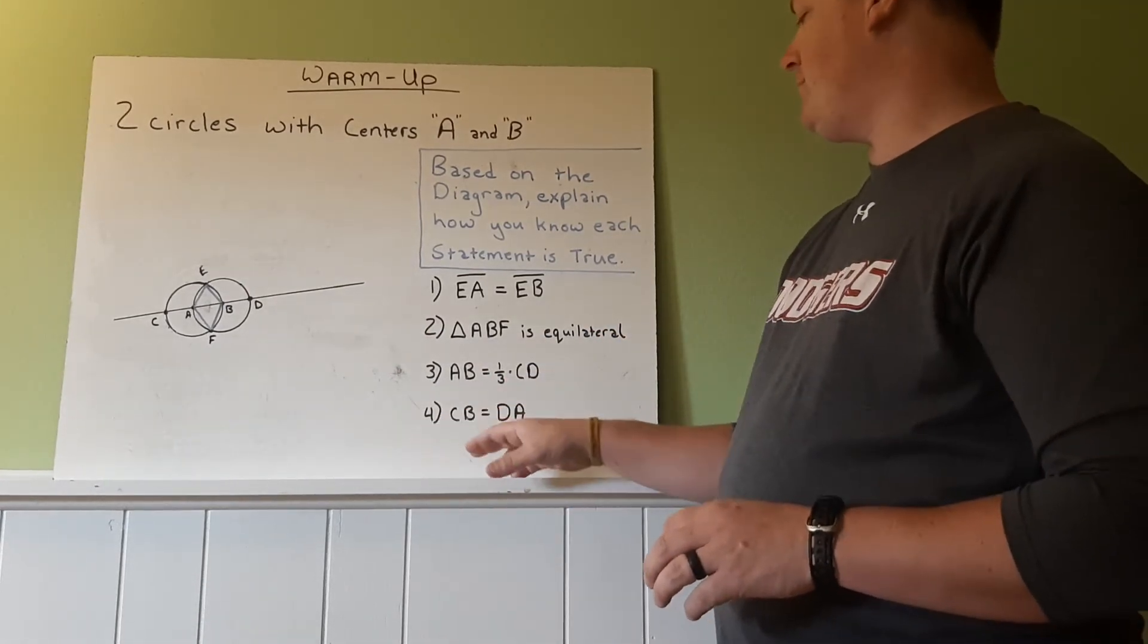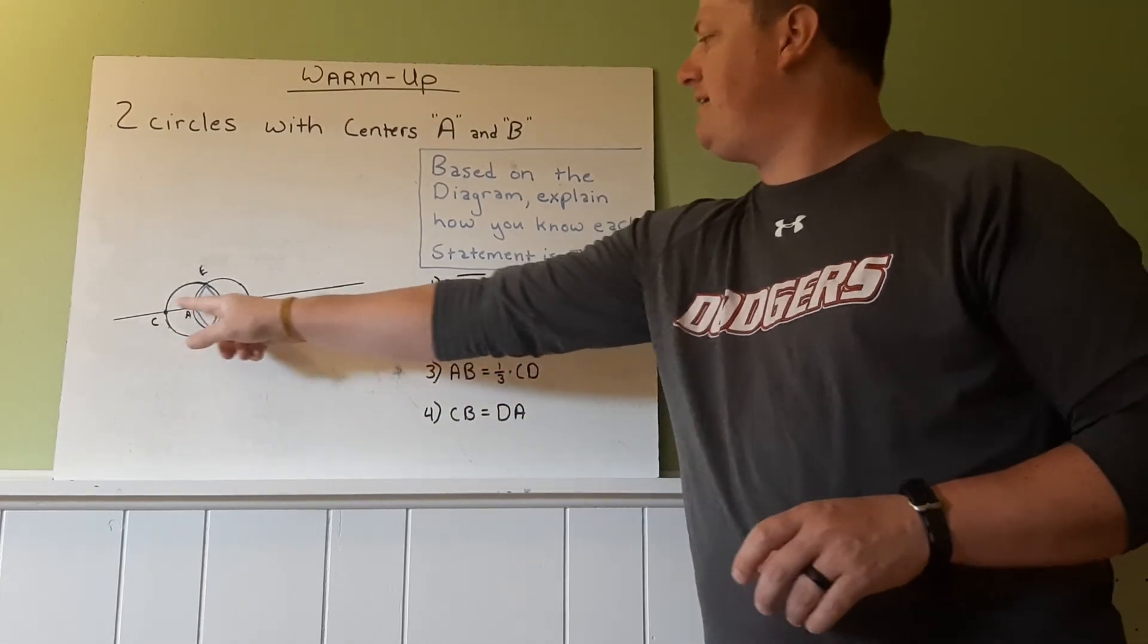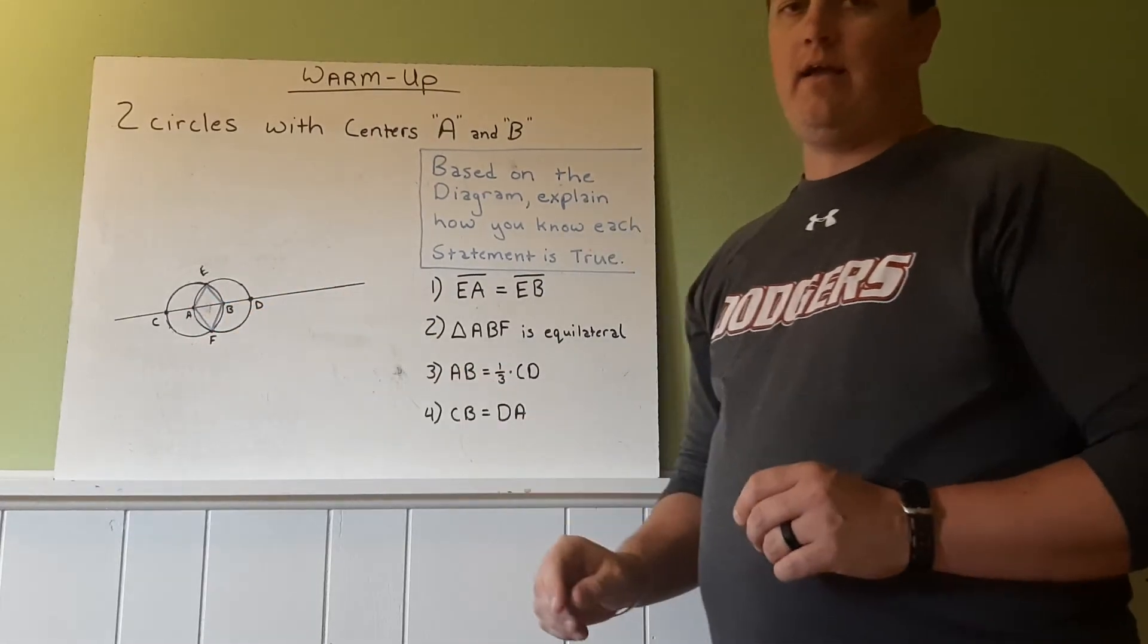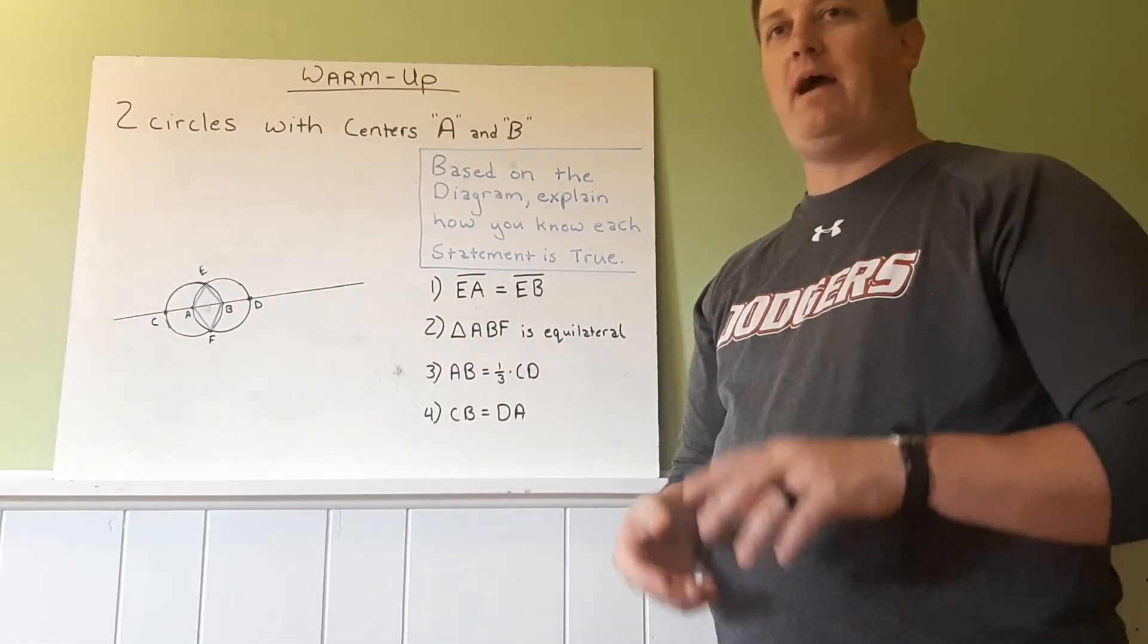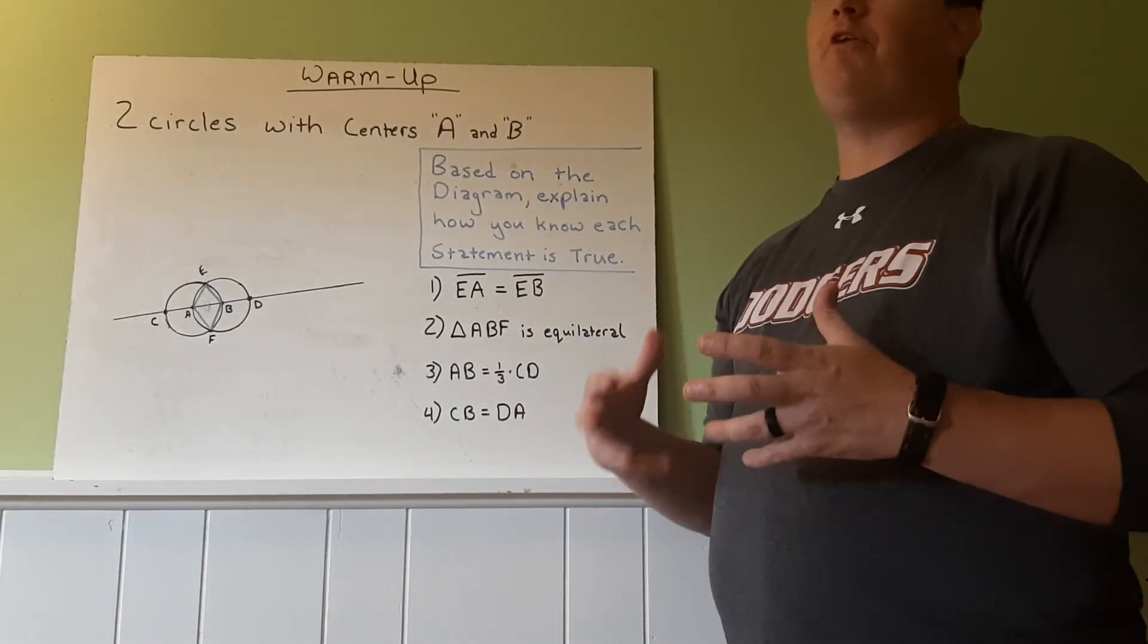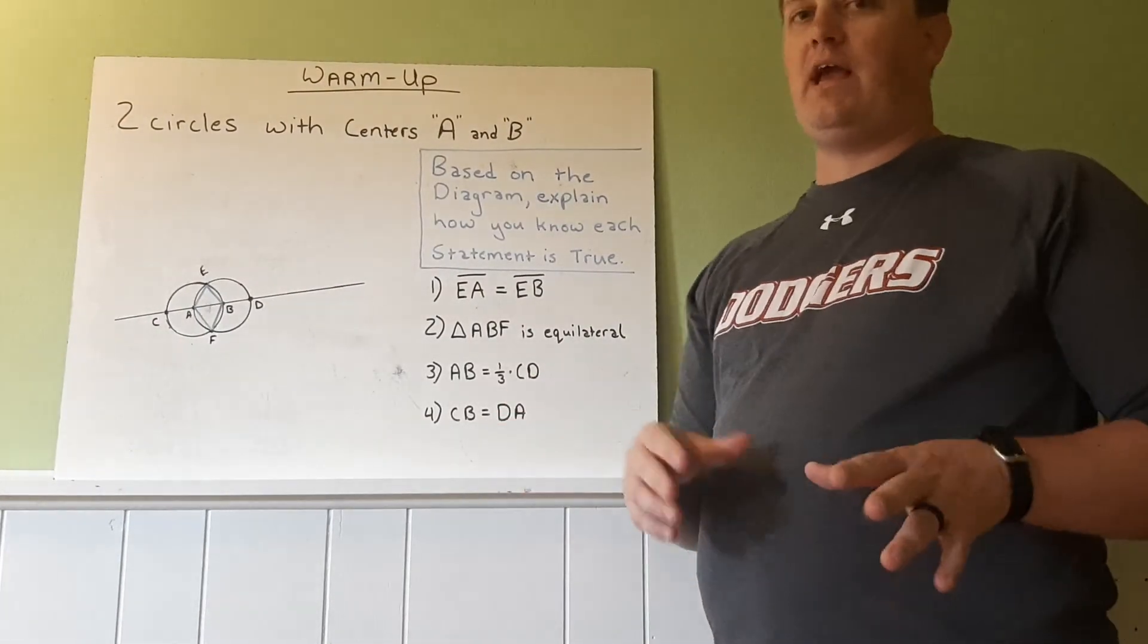All right. The last one here, number four is CB. So C to B, from C to B, that distance equals the distance from D to A. So try and come up with either a mathematical way to prove these or a verbal way of kind of explaining how you think this works. Do the best you can.